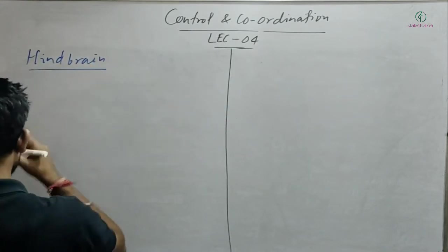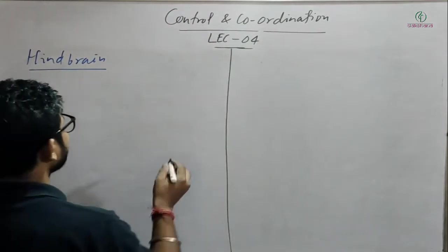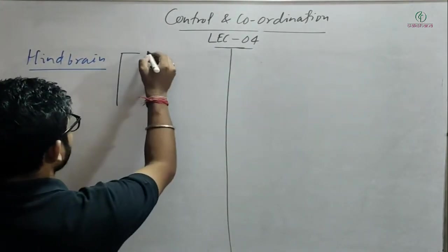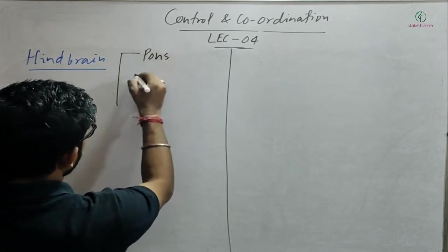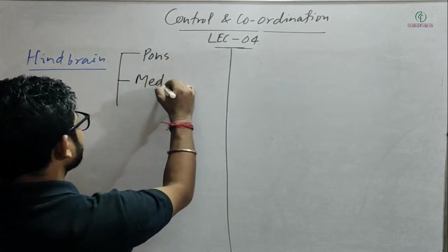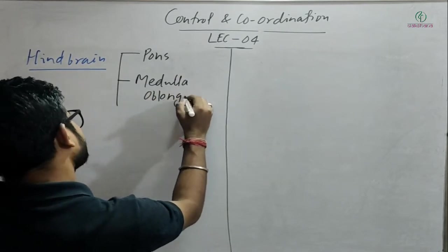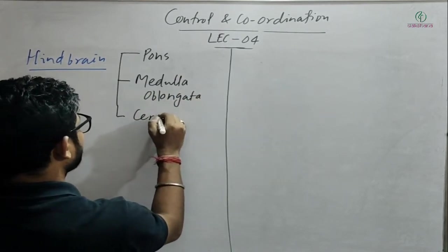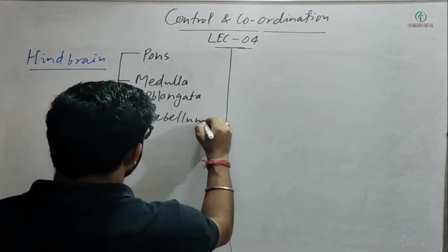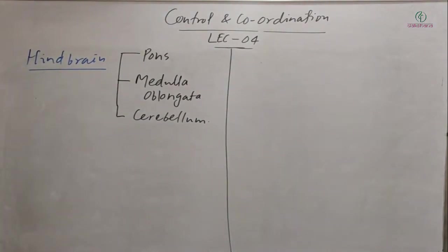There are three main regions of the hindbrain. The first is pons, the second is medulla oblongata, and the third region is cerebellum. About all these three regions, I am going to discuss in detail — about the functions of all these three regions.